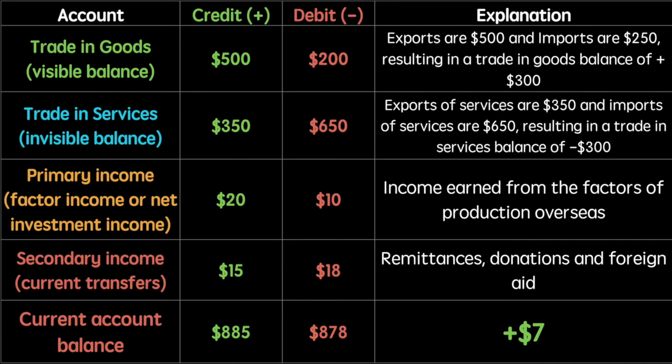It is important to recognize all the components of the current account. Simply having access to the trade balance, which is the total of the trade in goods and services, does not provide us with our current account balance. We must also include primary and secondary income with our trade balance to determine our current account balance.